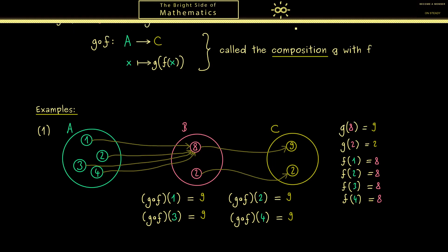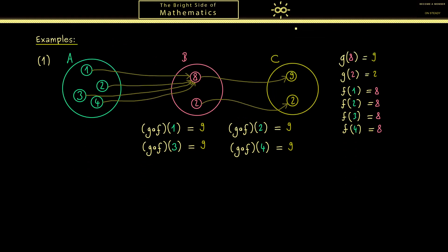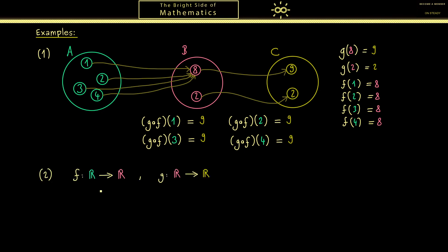However this changes when all the three sets are actually the same. In the next example we just take the real numbers R for all the three sets. And I want F to be the function that sends x to x squared. And G should be the function that sends x to the sine of x.